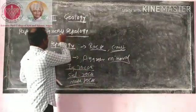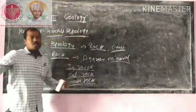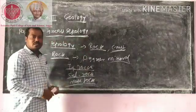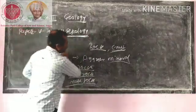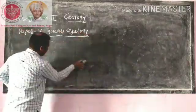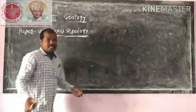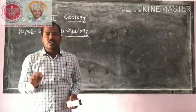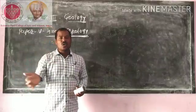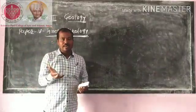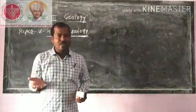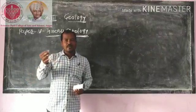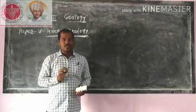Now this chapter focuses on igneous rock. What is igneous rock? Igneous rock is formed from the cooling and consolidation of magma. Magma is the hot and molten material present below the earth's surface in the asthenosphere, at 75 to 250 km below the earth's surface.